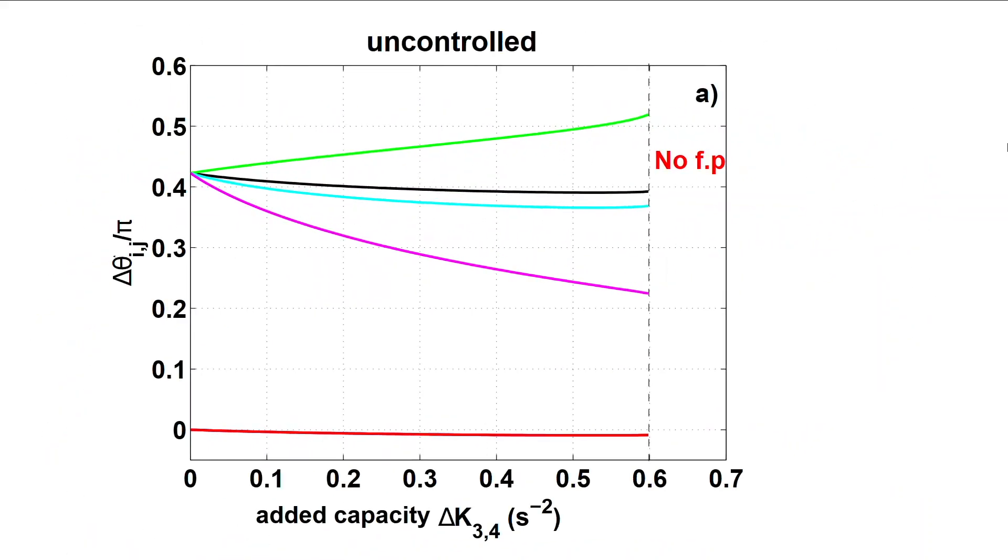Next, we track how the state of the system changes when slowly adding additional transmission capacity to the network. At a critical added capacity, the fixed point of the system vanishes and becomes unstable. In the real world, we would encounter a blackout.